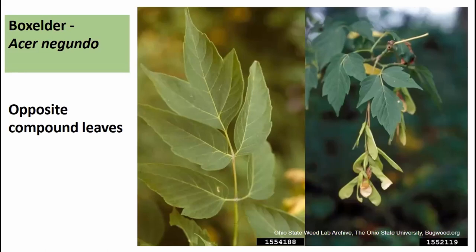Box elder also has opposite compound leaves but is actually a maple — our only maple in Indiana with compound rather than simple leaves. It typically has three to five leaflets in opposite arrangement. The seeds strongly resemble those of other maples. The three leaflets can look a lot like poison ivy, but poison ivy has alternate leaf arrangement, which is a good way to tell them apart.